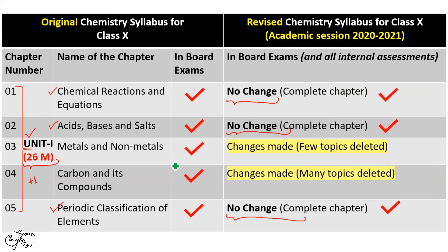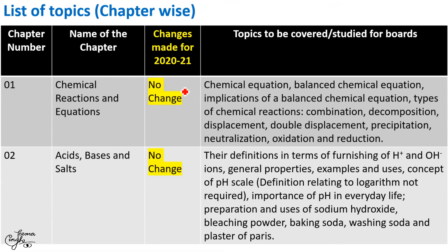The only two chemistry chapters where changes have been made are Chapter 3, Metals and Non-metals, and Chapter 4, Carbon and its Compounds. CBSE in its final board examination, as well as your teachers in all internal examinations, will not make any assessment from the deleted portions. Let us now have a look at the topics that have been deleted for this session. Since no change has been made in the first two chapters, all the original topics from those chapters are included in your syllabus.